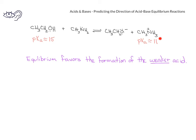Therefore, the methyl ammonium cation is stronger, and the ethanol compound is the weaker of the two acids. Therefore, based on our rule of thumb, the equilibrium will favor the formation of the ethanol.